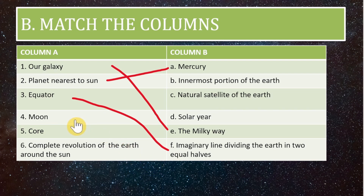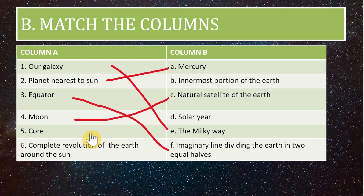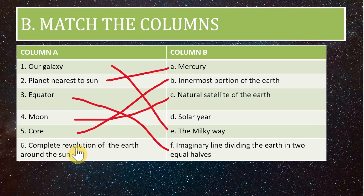Moon is the natural satellite of the earth. Core is the innermost portion of the earth. The complete revolution of the earth around the sun is called the solar year.